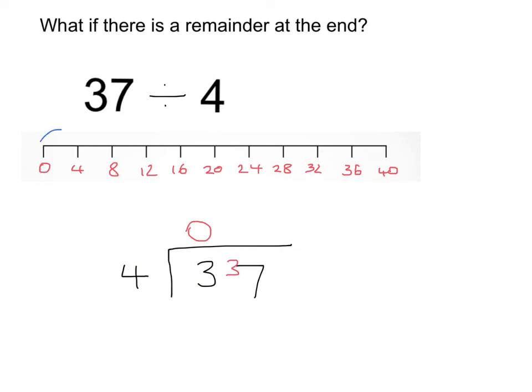And it's 1, 2, 3, 4, 5, 6, 7, 8, 9 jumps, 9 and a bit jumps so we are going to write down 9 but now we know we need to count from 36 up to 37 which is a remainder of 1.